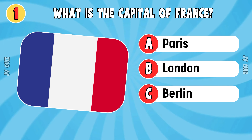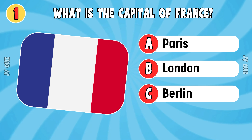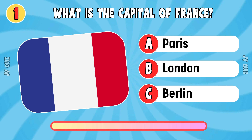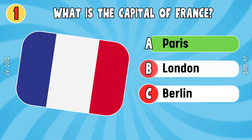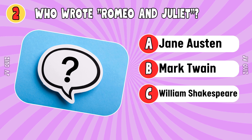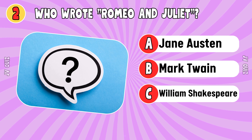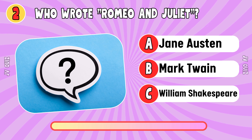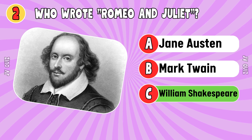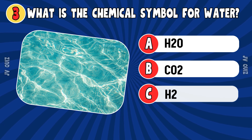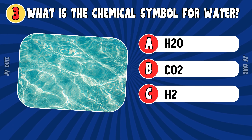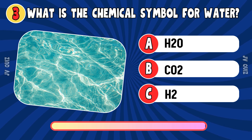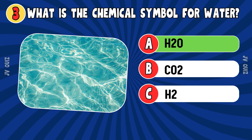What is the capital of France? Paris. Who wrote Romeo and Juliet? William Shakespeare. What is the chemical symbol for water? H2O.